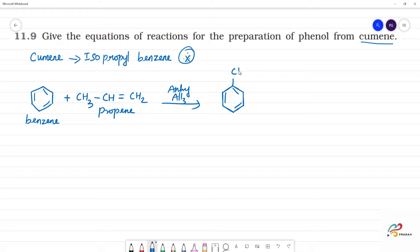Isopropylbenzene is formed. That is CH with CH3 and CH3. Here we remove one hydrogen from CH and join. So what we will be getting is CH3-CH-CH3. This is isopropylbenzene, or cumene.